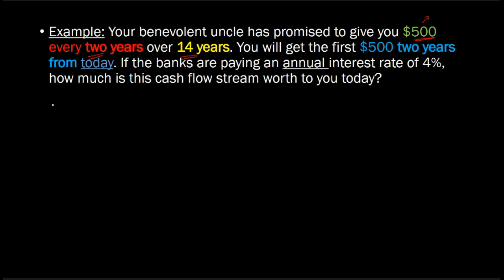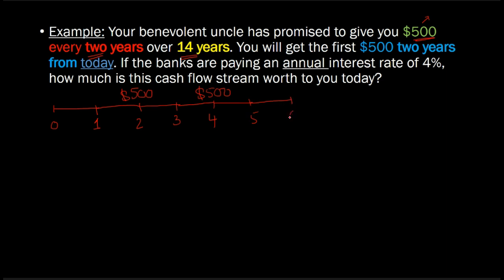If you represent this on a timeline where each interval represents one year, you're going to get the first $500 two years from today. Then year three goes by, and you get the next $500 four years from today. The next one is at the end of year six, and you continue all the way out to the end of year 14, when you get your last $500 cash flow.